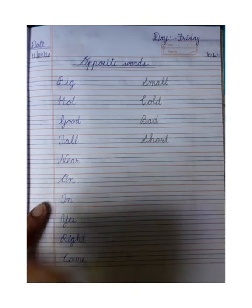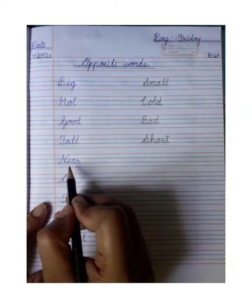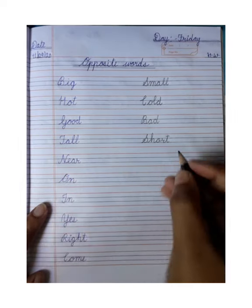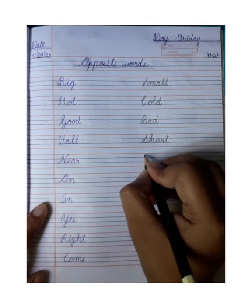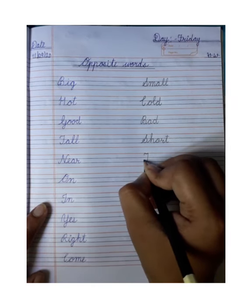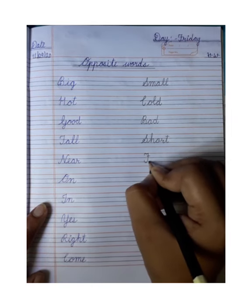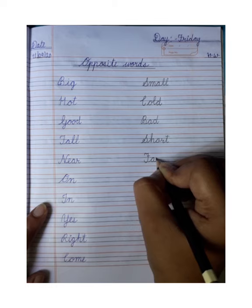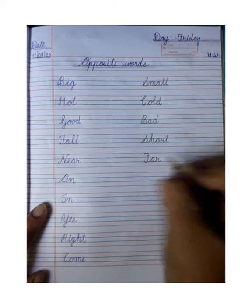Next, near — near yani paas. Near ka opposite kya hoga? Far. F-A-R, far.